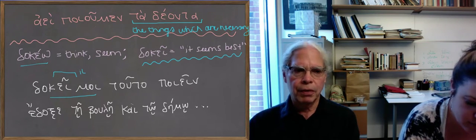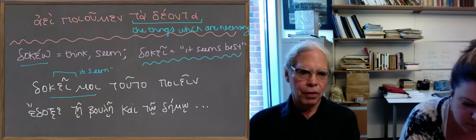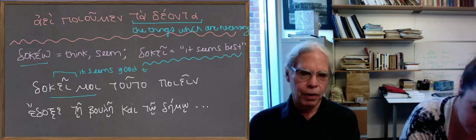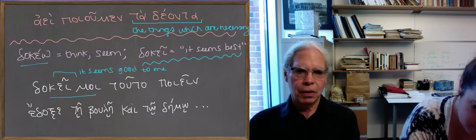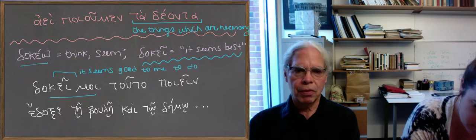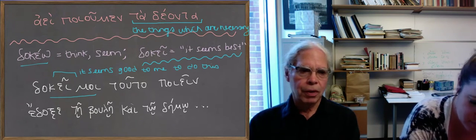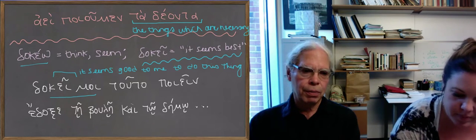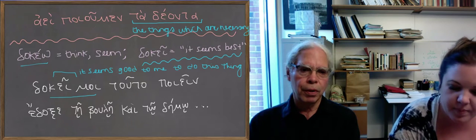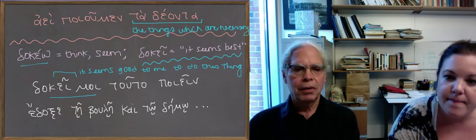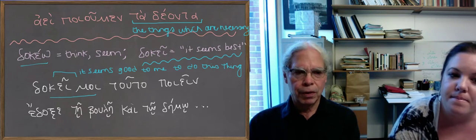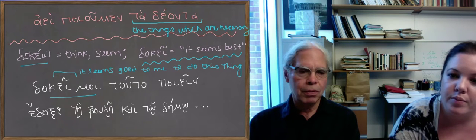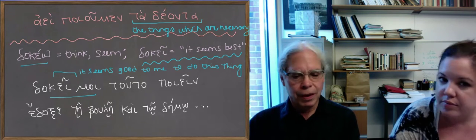But there's plenty of examples of δοκεῖ. There's also the one that I mentioned when we had δοκεῖ μοι in the vocabulary in the last lesson, that it's the way you introduce a decree in Athenian politics. It seemed best, it seemed good to the boule and the demos. Standard way, and you see the inscriptions. So that's that.